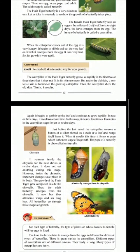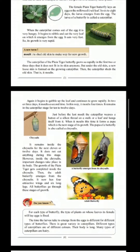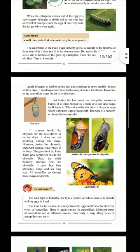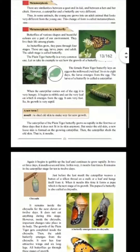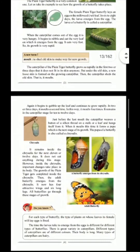Again it begins to gobble up the leaf and continues to grow rapidly. In two or three days it molds a second time. In this way it molds four times. It remains in the caterpillar stage for 10 to 12 days. Just before the last mold, the caterpillar weaves a button of a silken thread on a stalk or a leaf and hangs itself from it. When it molds this time, it forms a pupa, which is the next stage of its growth after the larva.